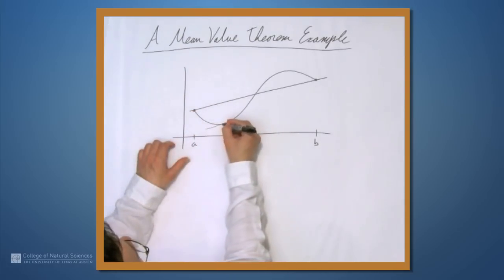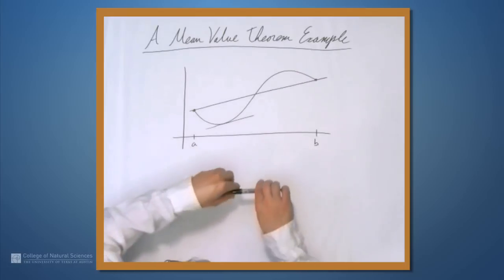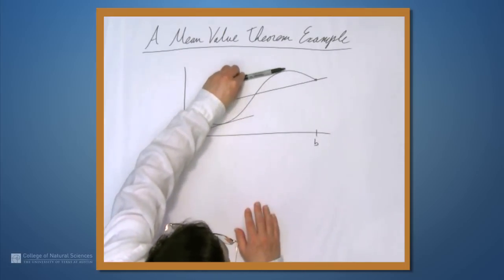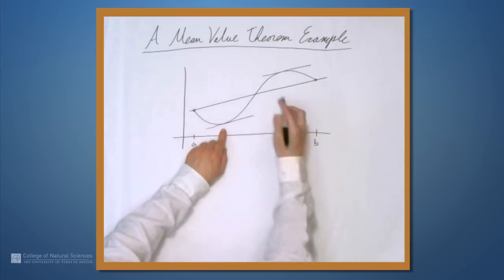And here you can see that the derivative has the same value as the slope of this line. In fact, in this case you can also take this line and drag it up, and you'll eventually hit this point. So here we have two values.